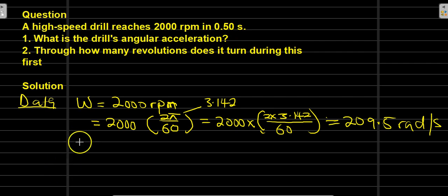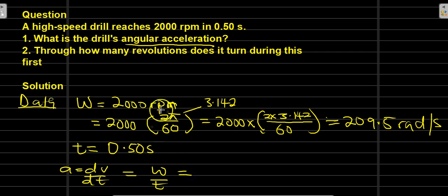T is equal to 0.50 seconds. To find the angular acceleration, remember that acceleration is equal to dω/dt. But in this case, we are going to use acceleration equals to omega over t. For what we have here, our omega is 209.5 all over t which is 0.5, and this is going to give us...